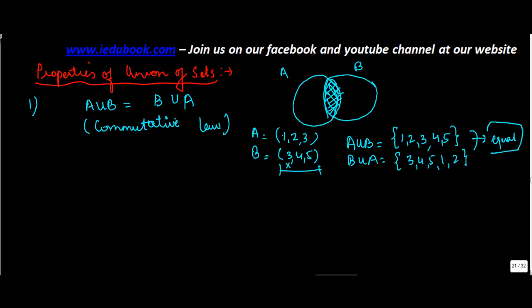Why? Because this is what we saw earlier that if the elements contained in both the sets are common. Let's say each element of A is present in B and each element of B is also present in A, then both the sets are equal. So therefore A union B is equal to B union A.